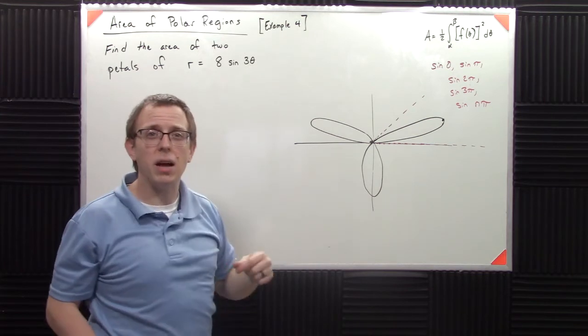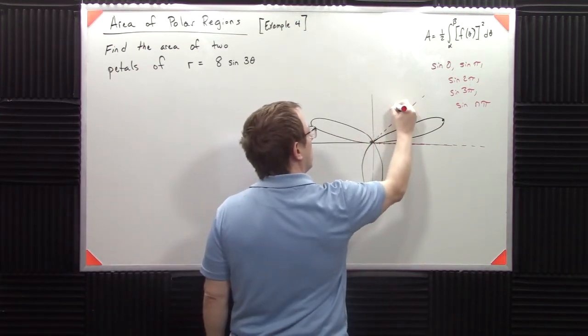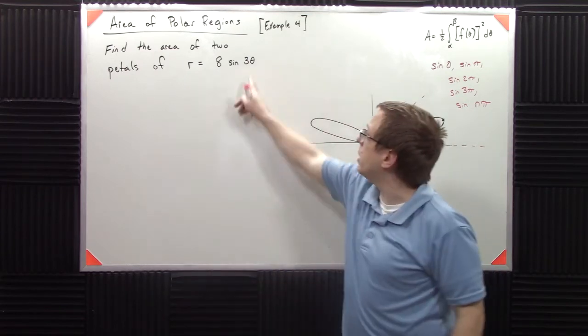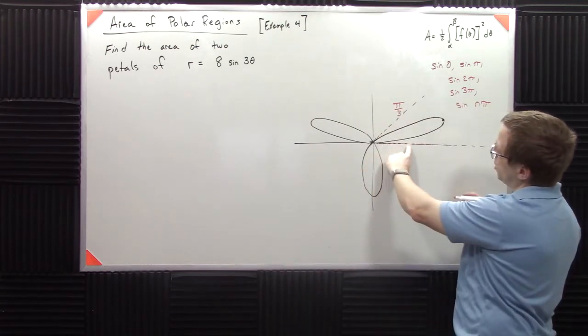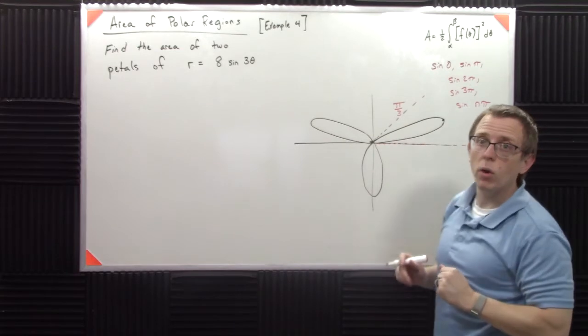But what about when theta is like pi over three? Well, then if theta is pi over three, that becomes sine of pi. So we'll go back to zero. So that tells me that between zero and pi over three, I get one of the petals.